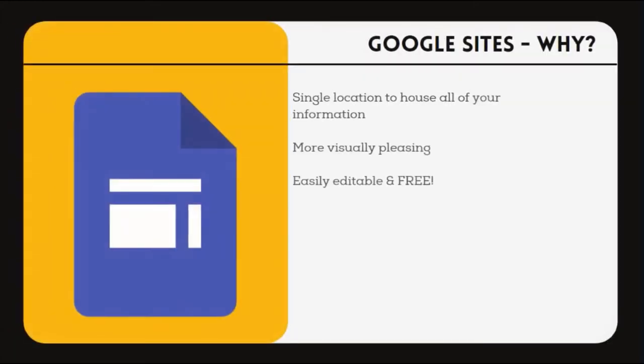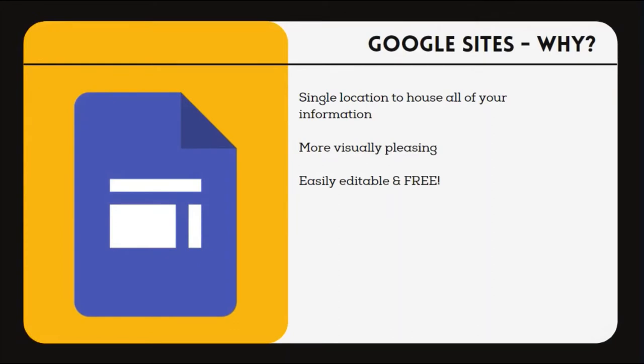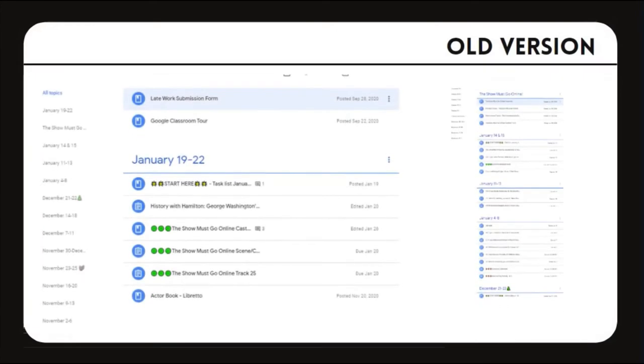Our first tool is Google Sites. This website builder allows us to create a single location that houses all of our information and organizes it in an iconic fashion instead of simply text-based. Google Sites is free and easy to use. Let's look at two examples of digital classrooms — here is example number one, the old version: Google Classroom.